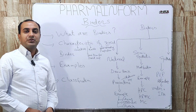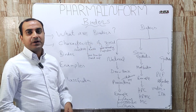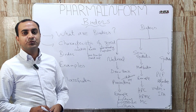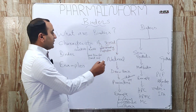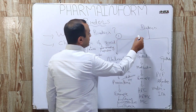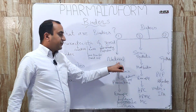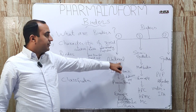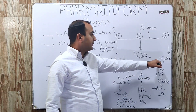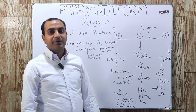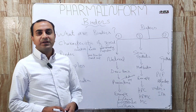One of the most important questions asked is regarding the classification of binders — how binders used in the pharmaceutical industry are classified. Basically, binders are classified into three classes: class one, two, and three. The first is natural binders, the second is semi-synthetic binders, and the third is synthetic binders.